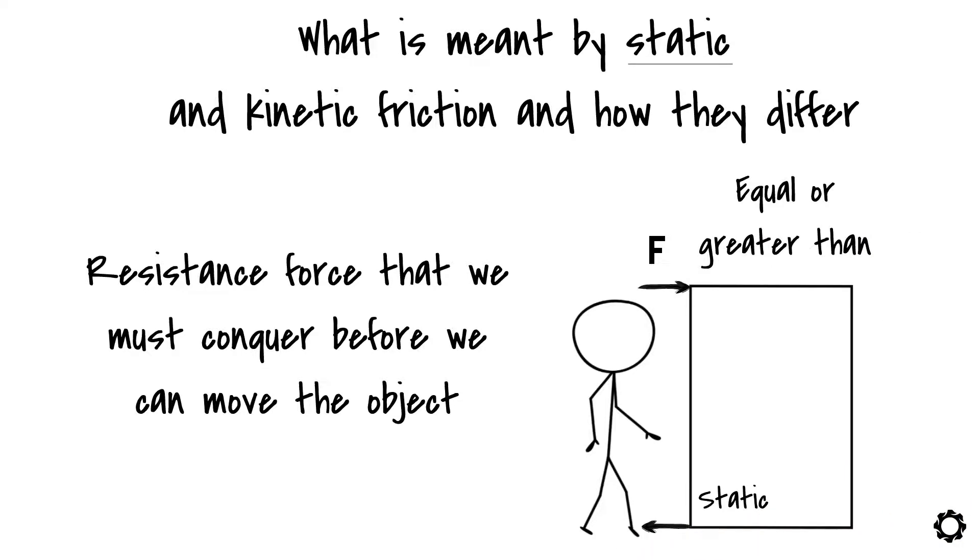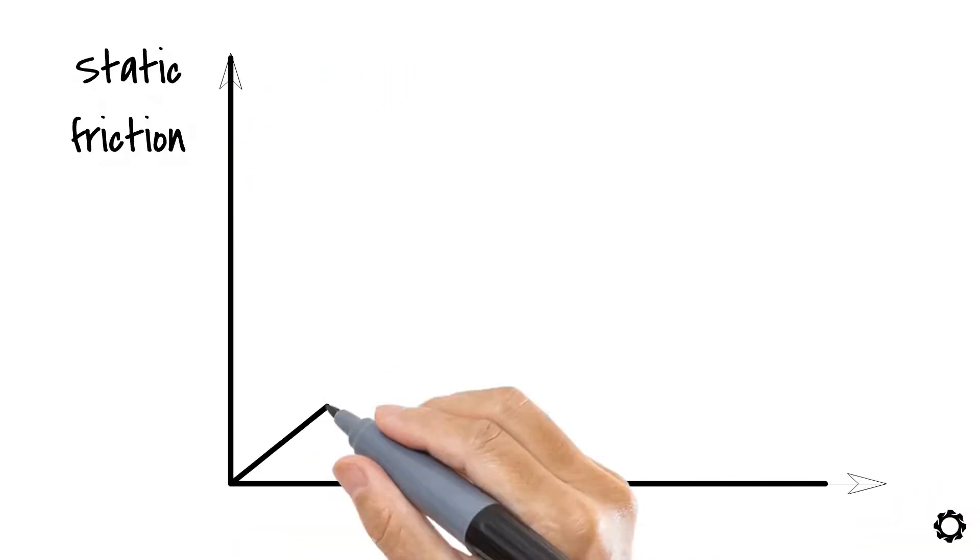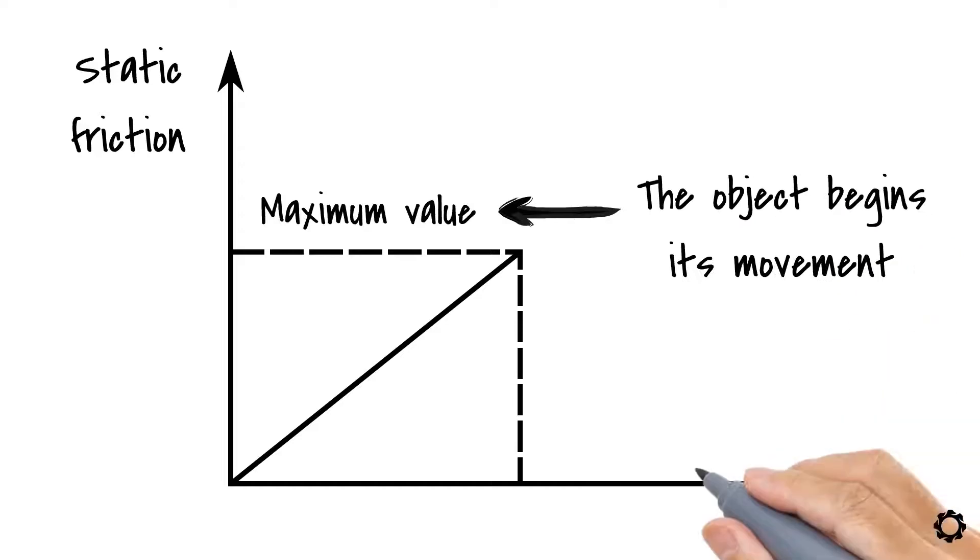Notice that the static friction would have zero value if we wouldn't apply any force. Thus, static friction is a developing resistance force which gains its maximum value just before the object begins its movement, which is caused by the external force.